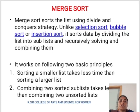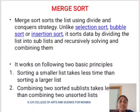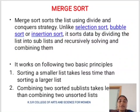Merge Sort uses the Divide and Conquer technique. Unlike Selection Sort, Bubble Sort, or Insertion Sort, it sorts the data by dividing the list into sub-elements and recursively combining them. It works on the following two principles: sorting a smaller list takes less time than sorting a larger list, and combining two sorted sub-lists takes less time than combining two unsorted lists.